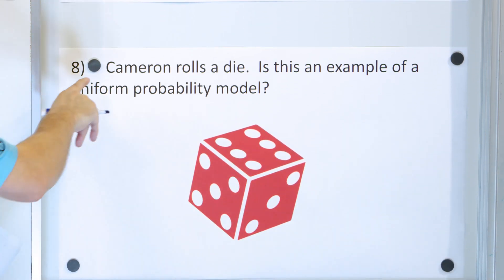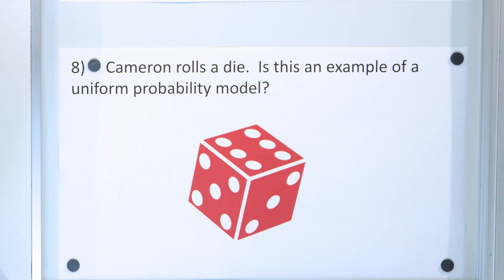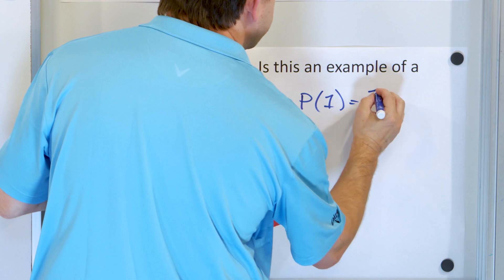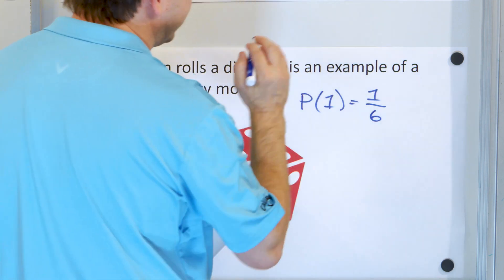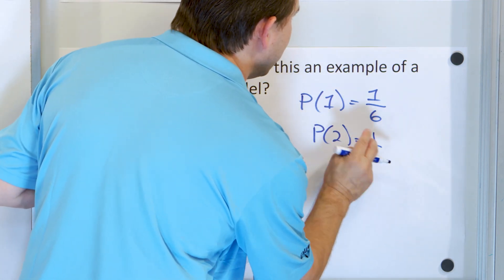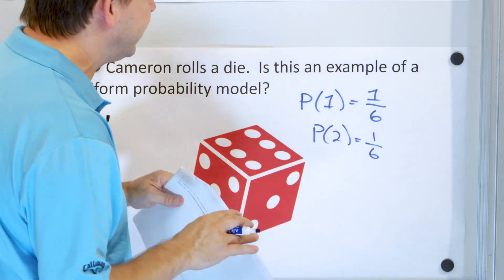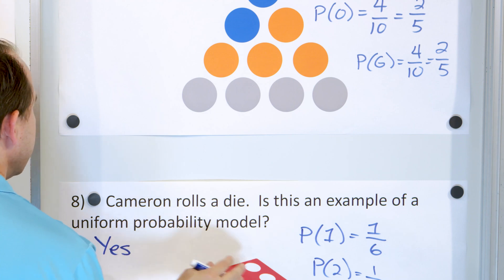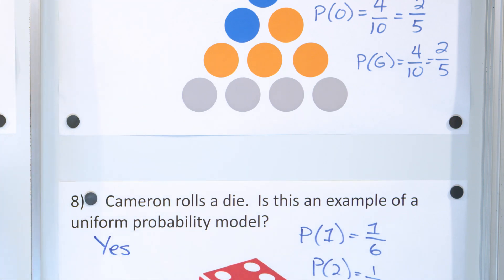Here's our last question. Cameron rolls a die. Is this an example of a uniform probability model? The probability of rolling a one is one possible side out of a total of six, so one-sixth. The probability of rolling a two is also one-sixth. The probability of rolling three, four, five, or six is always going to be the same — one-sixth. So yes, this is a uniform probability model.